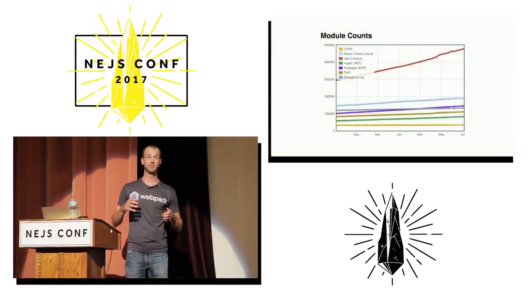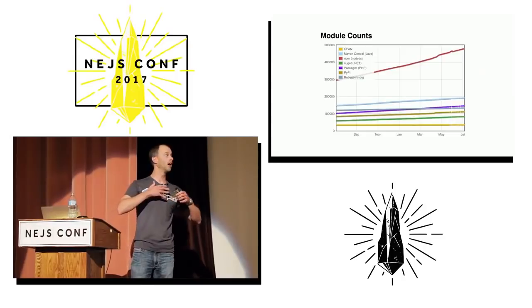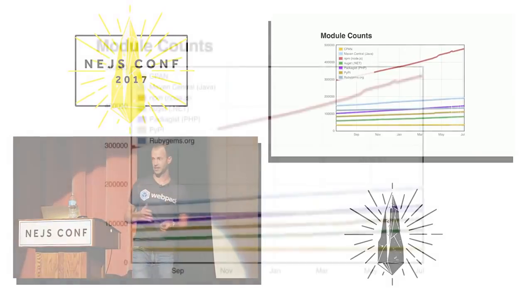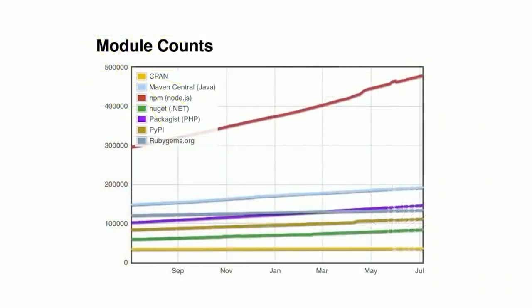And NPM's growth has been unprecedented. Look at these lines — you want to guess which one is NPM? Come on, you're supposed to know — it's the one on top. It's kind of baiting you there. This green line down here is .NET's package manager, NuGet.